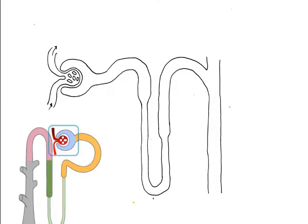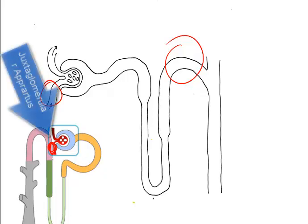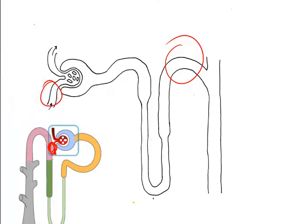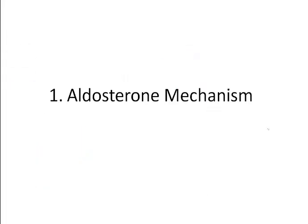Before we talk about these mechanisms, we need to redefine the anatomy. We've been looking at the nephron as though it's one stretched out structure, but in fact it's a lot more jumbled together. The afferent arteriole and the distal tubule actually share a common wall, so there are cells that connect the two structures together. This forms a structure called the juxtaglomerular apparatus, which can secrete hormones that aid in water reabsorption. The first is the aldosterone mechanism.